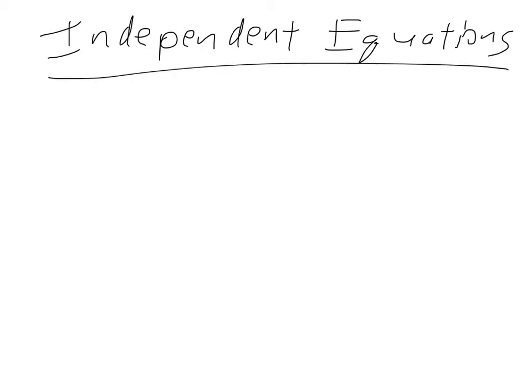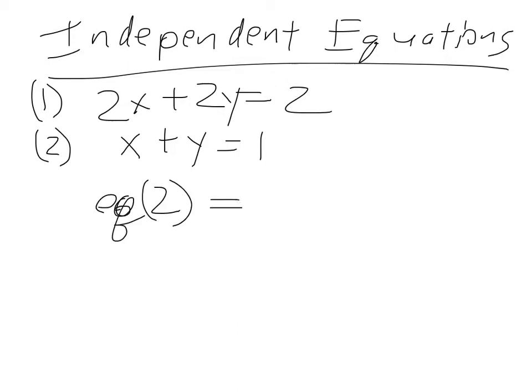I'll mention one other thing, the concept of independent equations. So not all equations that you can write down are independent. So 2x plus 2y equals 2, and x plus y equals 1. Those are two equations, but they're not independent of each other. This is equation 1, this is equation 2. So equation 2 equals 2 times equation 1. So if you were to just take equation 2, multiply it by 2, we'd get back equation 1. So they're not independent equations.